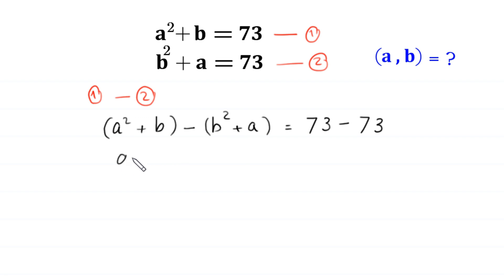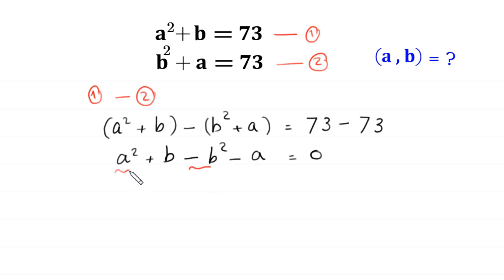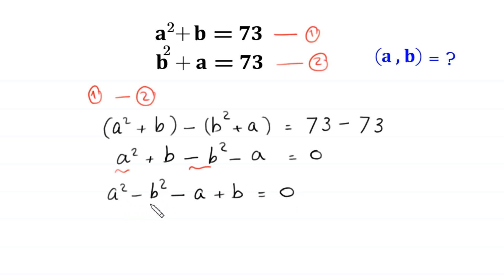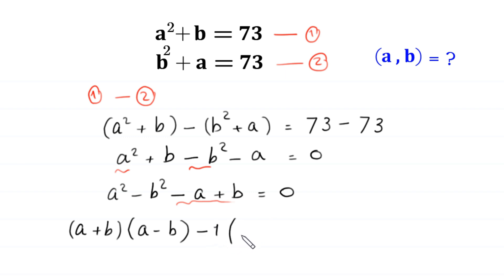Now we remove the brackets. So A squared plus B minus B squared minus A is equal to 0. We rearrange these terms, writing the negative B squared with the A squared. This expression becomes A squared minus B squared minus A plus B is equal to 0. Now A squared minus B squared equals A plus B times A minus B, and from the remaining terms negative A plus B we can factor out negative 1, leaving A minus B in bracket, equal to 0.